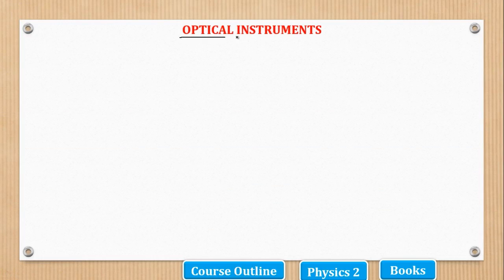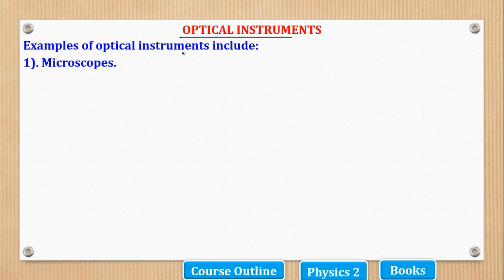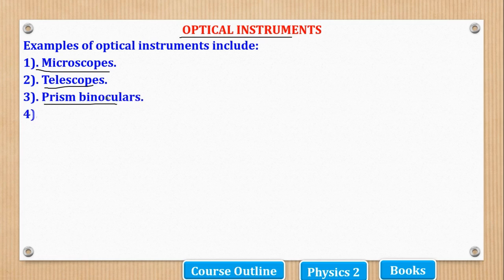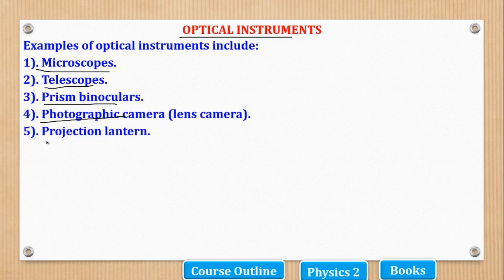Now we shall start our topic of optical instruments. The number of optical instruments we are interested in are five: microscopes, telescopes, prism binoculars, photographic or lens camera, and lastly projection lantern. Before we look at the optical instruments one by one, we shall need some general terms and definitions which will cut across all optical instruments.